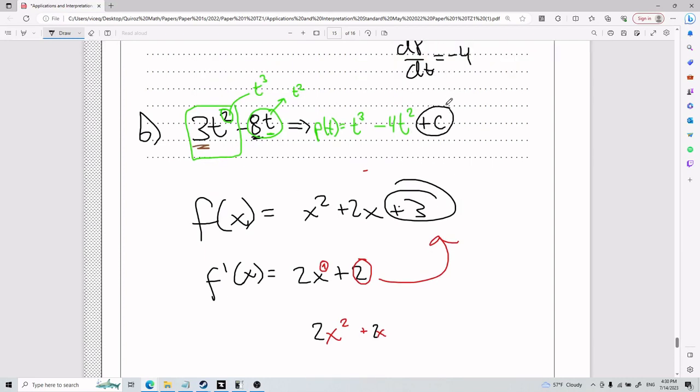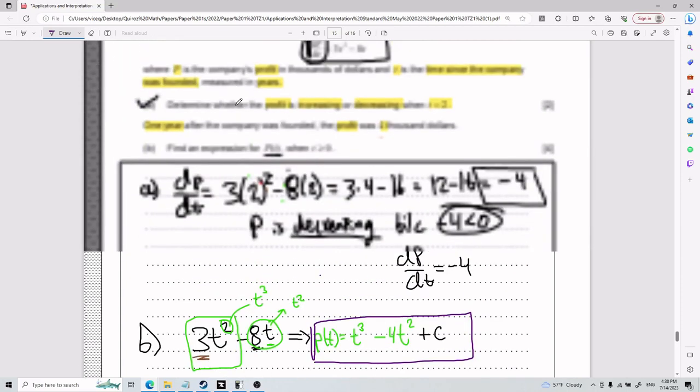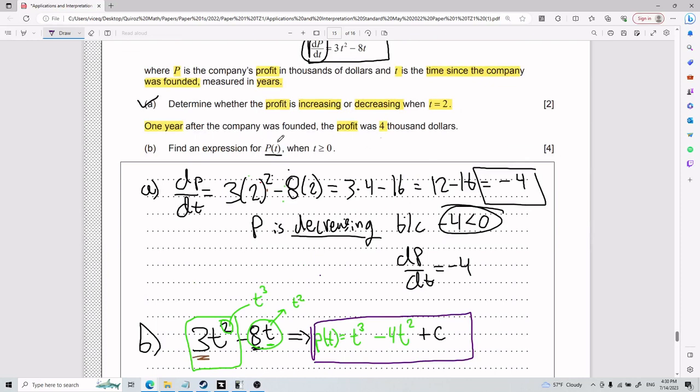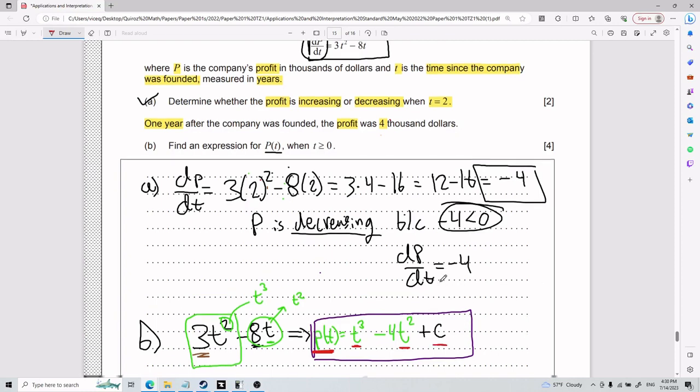Because this symbolizes any 3 that you might be missing, any constant that you might be missing. So right now my current scenario is this right here. P(t) equals t cubed minus 4t squared plus c. So until I find the value of c, I'm not done yet. Right now I have three variables going on: I have P(t), I have t, and I have c.